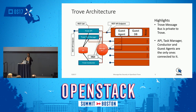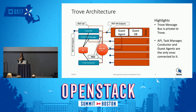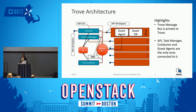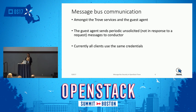When the user makes a REST API call to provision or launch an instance, it goes through the Trove API, and from there it communicates with all these different Trove services. They communicate with each other using RPC over this message bus. In Trove, we use RabbitMQ to implement the messaging service.